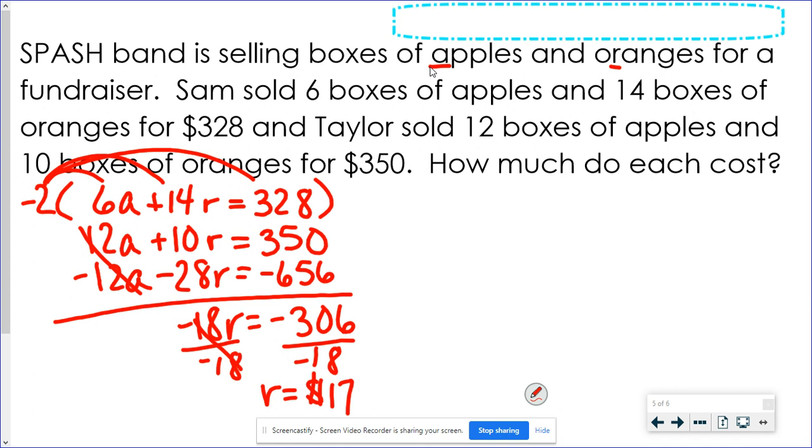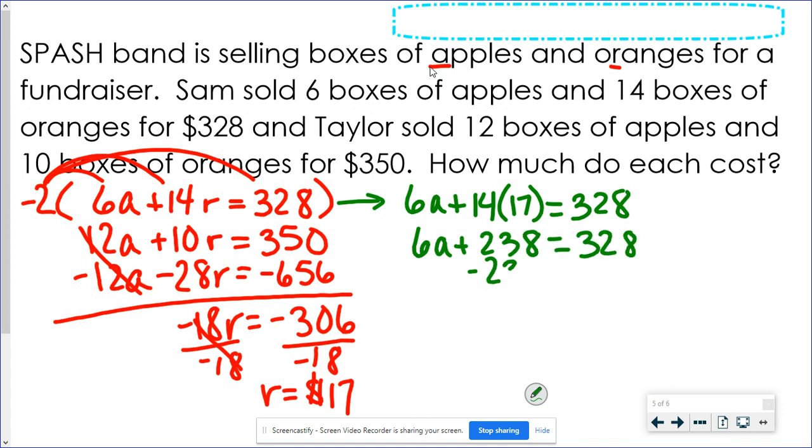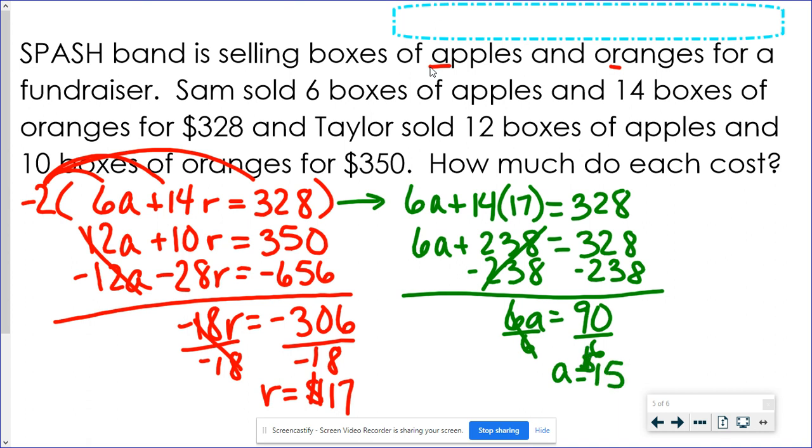The apples then, I'm going to go back to my top equation. And I'll have 6A plus 14 boxes of oranges and each one is $17, equals 328. So 14 times 17 is 238. So let's get rid of that 238. That's going to be 90. And when I divide that by 6, I get that apples are $15. So here it is labeled. Apples are $15 for a box and oranges are $17 for a box.